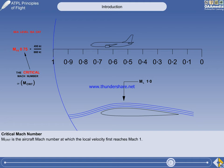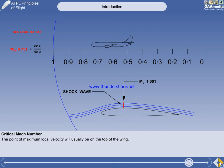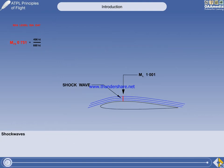The critical Mach number is usually shortened to M-Crit. The reason that M-Crit is such an important reference is that as soon as M-Crit is exceeded by even the smallest margin, a shock wave will start to form at the point of maximum local velocity. The illustration shows the local Mach number just a touch faster than Mach 1 and a shock wave present on the wing.